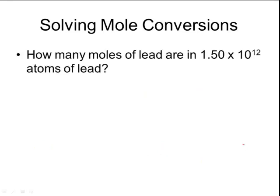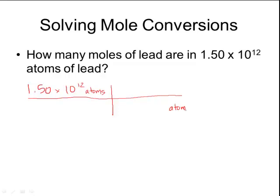I can also do mole conversions involving the number of particles. How many moles of lead are in 1.5 × 10¹² atoms of lead? Write down what's given. An atom is a type of particle, so on the mole map I'm at particles and can directly convert to moles using Avogadro's number: one mole = 6.02 × 10²³ atoms. Dividing gives 2.49 × 10⁻¹² moles.